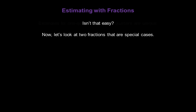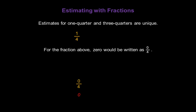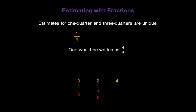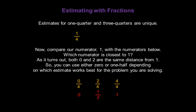I want to look at a couple of fractions that are special cases. Estimates for 1 quarter and 3 quarters are unique. Let's start with 1 quarter. For that fraction, 0 would be written as 0 over 4, 1 half would be written as 2 over 4, and 1 would be written as 4 over 4. Comparing the numerator 1 with those reference numerators, both 0 and 2 are the same distance from 1. That means you can use either 0 or 1 half in your estimate, depending on which works best for the problem you're solving. So 1 quarter could either be 0 or 1 half.